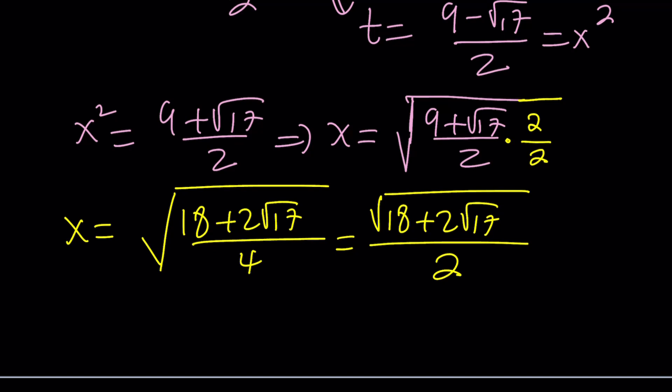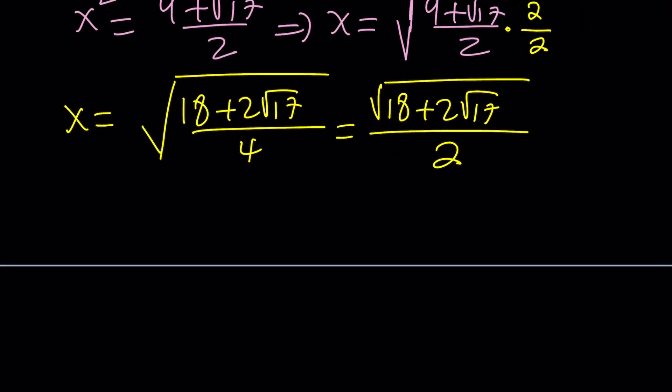And the square root of 4 is obviously 2. Now, the denominator is good, but what about the numerator? Well, the numerator can be written as follows. Notice that 18 is 17 plus 1, and 17 is 1 times 17. So, what I mean by that is,